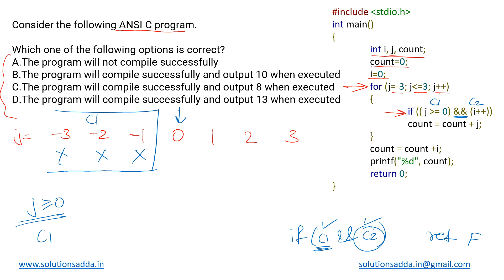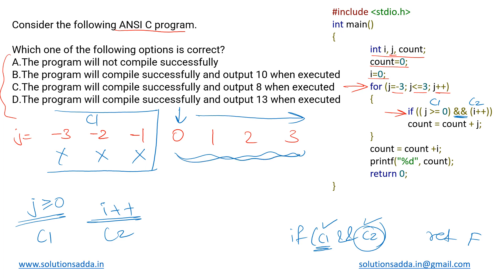When j becomes zero and onwards, the value of j satisfies being greater than or equal to zero, meaning c1 will be satisfied for these four values of j. Only then will we go and check c2, which is the condition i++.